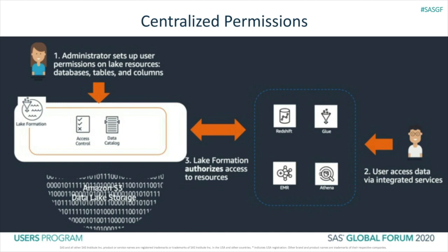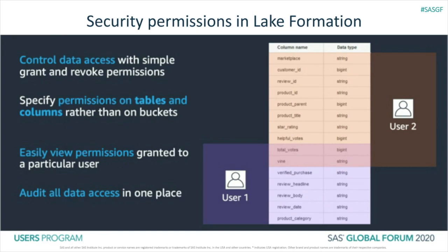It's also important to understand how the data is available at various levels. In previous data lakes, you would have had to deploy the permissions at a bucket level. However, with Lake Formation, permissions can be specified on tables as well as columns. This permission model also allows users to grant and revoke permissions and see all view permissions in one particular location. It also provides the ability to audit that access whenever there might be some challenges to user access.